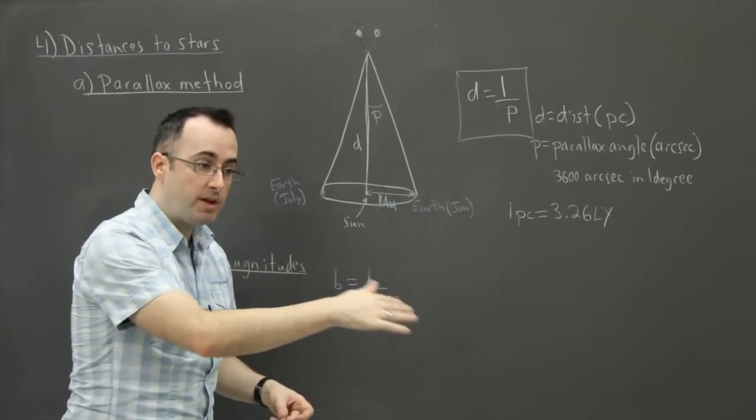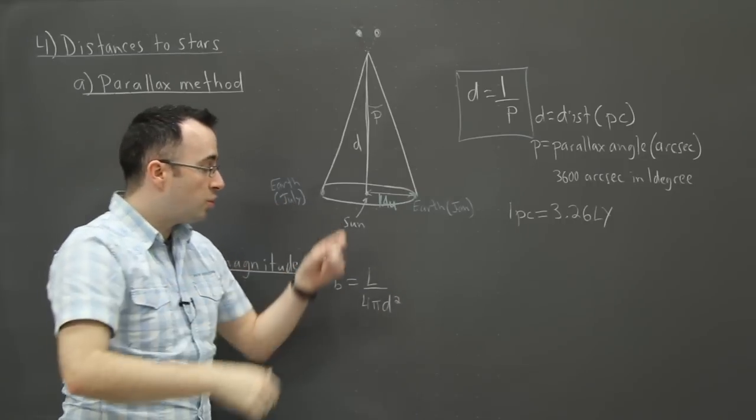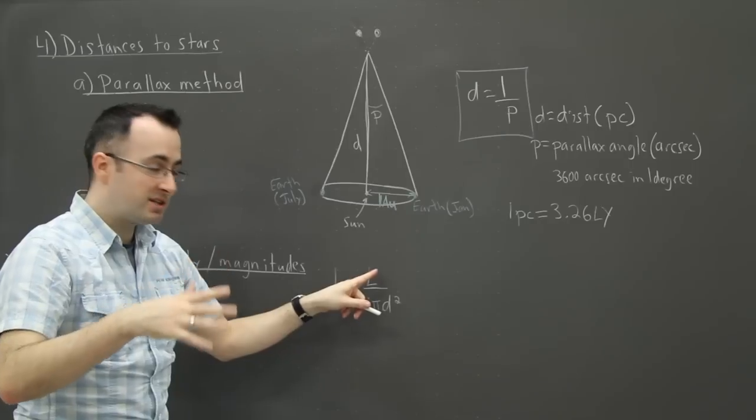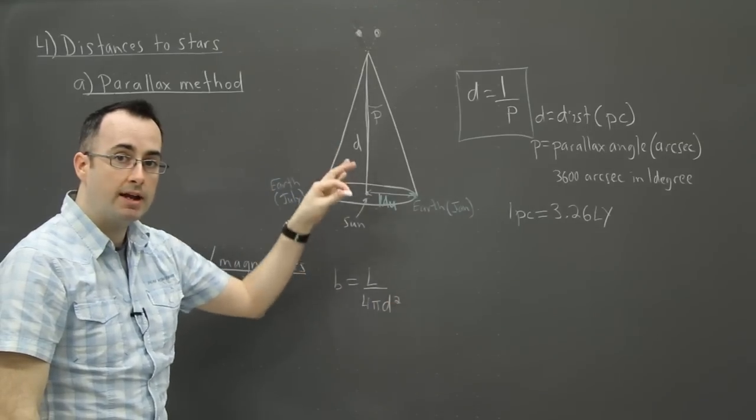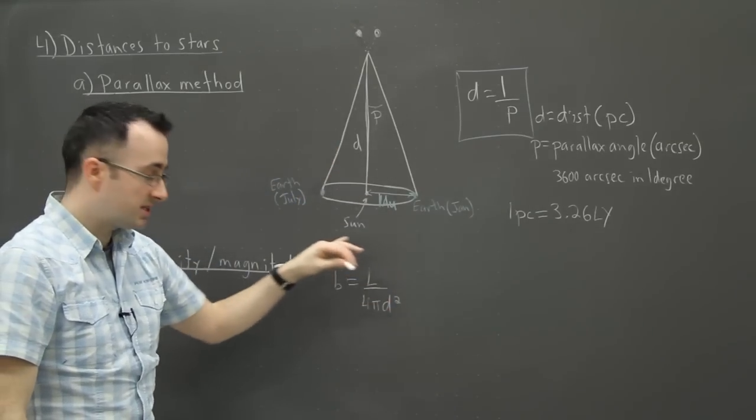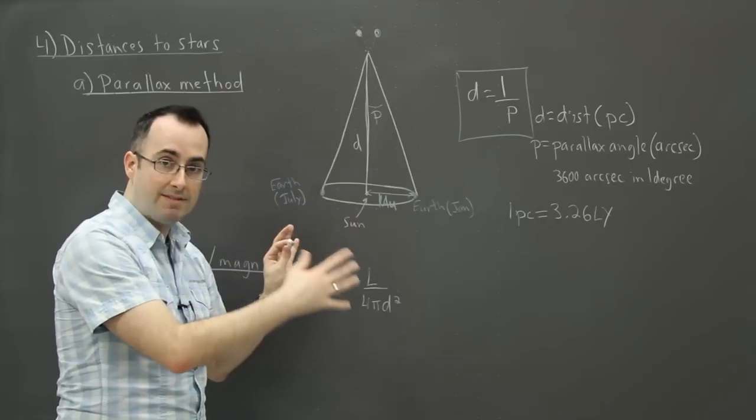From there, we know its class. From there, we know roughly where it sits on the HR diagram, which means we can infer its luminosity. It's a bit dodgier because certain things of certain spectral classes might be a little bit higher in the diagram than we expect, but it gives us a pretty good estimate. This is for things where we can see a spectrum, as long as it's a main sequence star and it behaves like we expect.